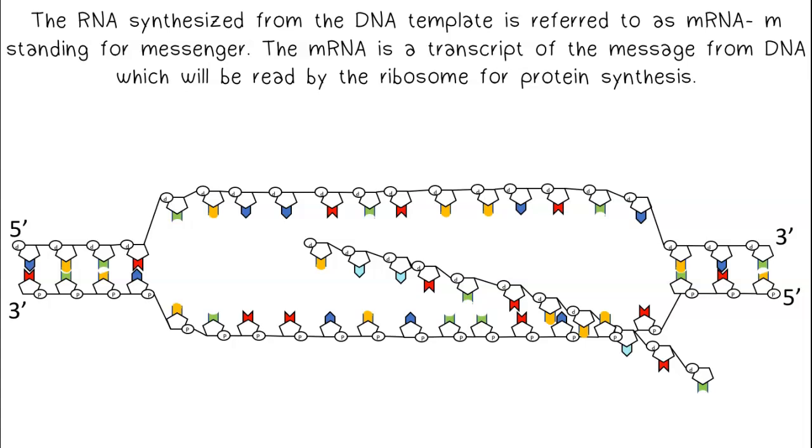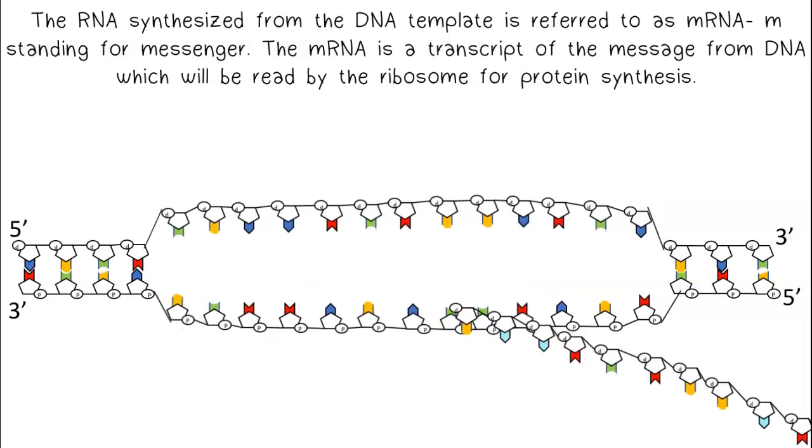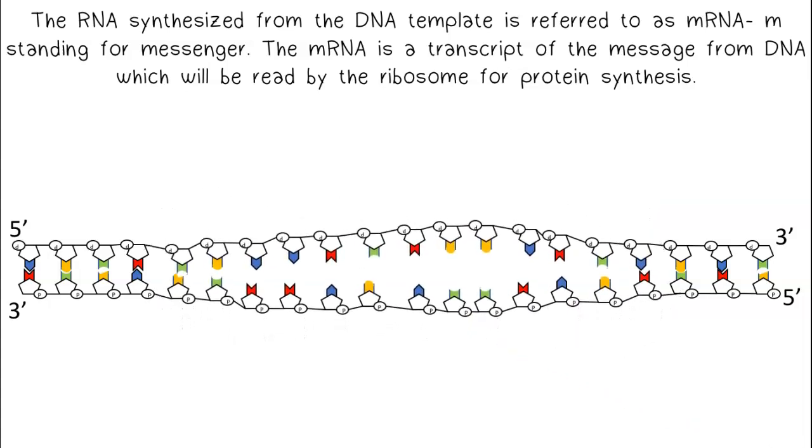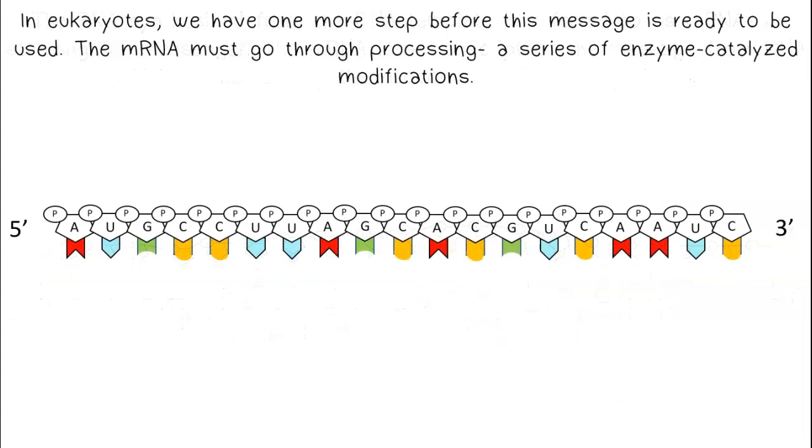The RNA synthesized from the DNA template is referred to as mRNA, M standing for messenger. The mRNA is a transcript of the message from DNA, which will be read by the ribosome for protein synthesis. In eukaryotes, we have one more step before this message is ready to be used. First, the mRNA must go through processing, a series of enzyme-catalyzed modifications.